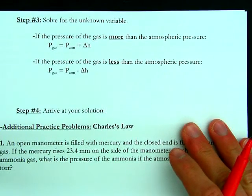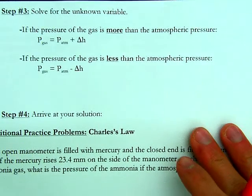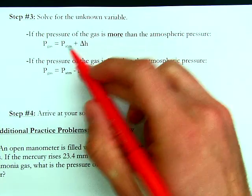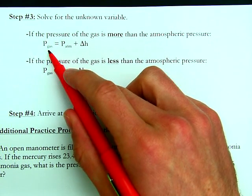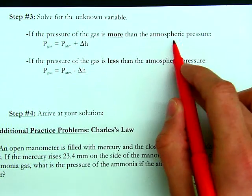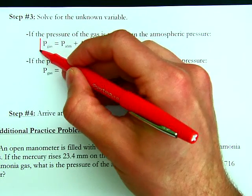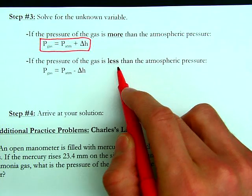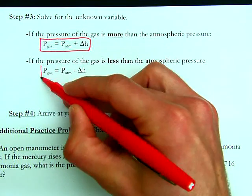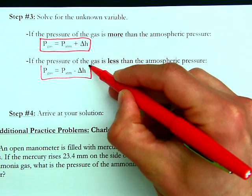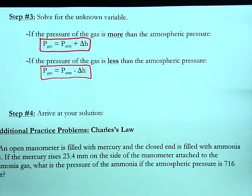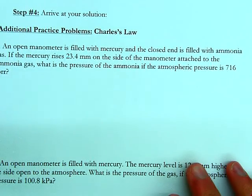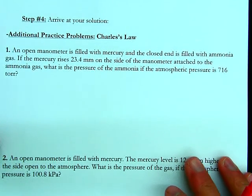Here's a little summary: if the pressure of the gas is more than atmospheric pressure, then P_gas equals P_atm plus delta H. If the pressure of the gas is less than atmospheric pressure, then P_gas equals P_atm minus delta H. Let's do a couple more practice problems.